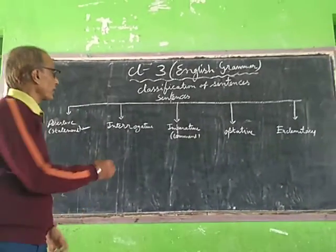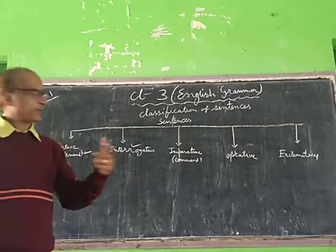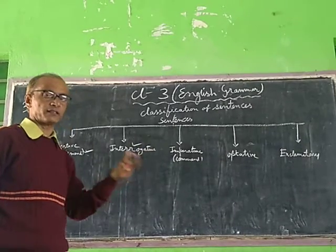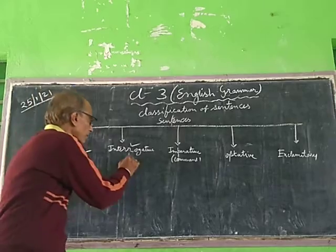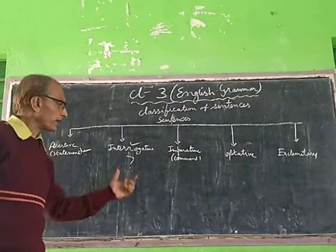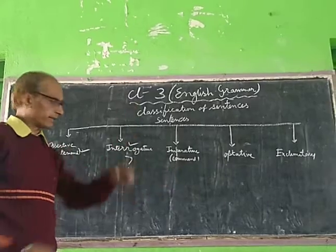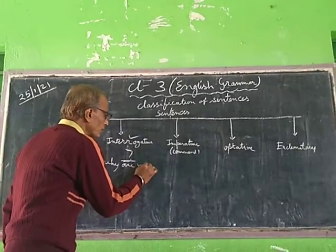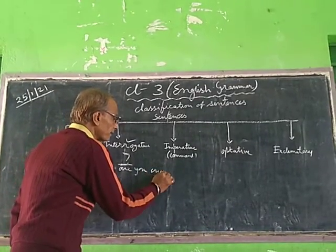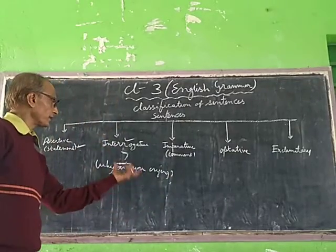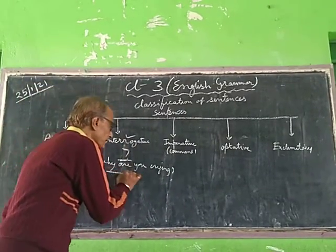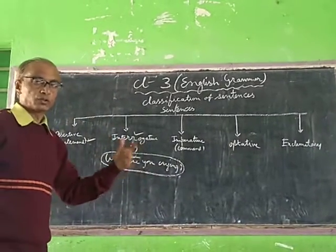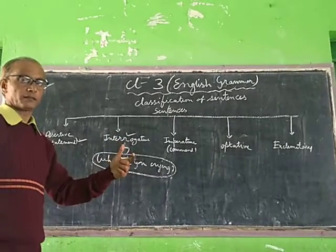Now let's come to interrogative. From the term itself you can guess what this sentence conveys. Interrogative — for example: 'Why are you crying?' At the end of the sentence you can say, 'Why are you crying?' This is an interrogative, because from this sentence you can know that I am asking you a question.